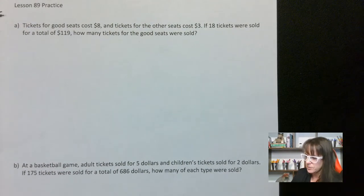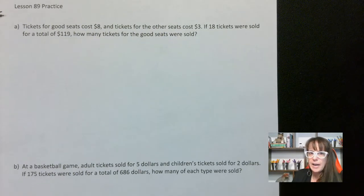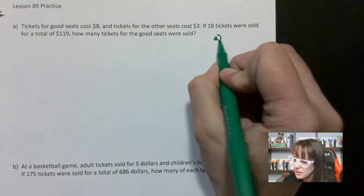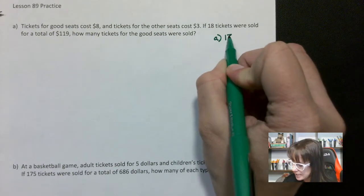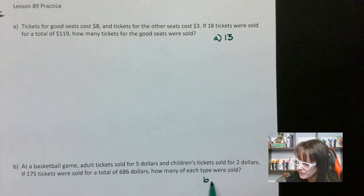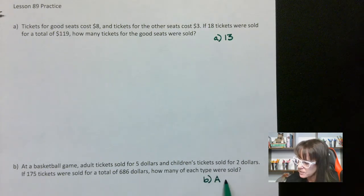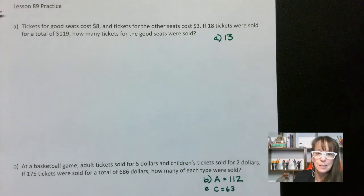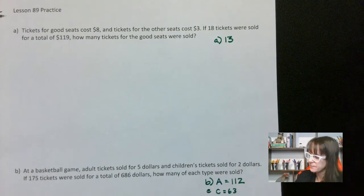For problem A, you should have gotten 13. For problem B, you should have gotten adult tickets: 112, and children's tickets: 63. If you didn't get that, stick around and I'll show you how to do it.